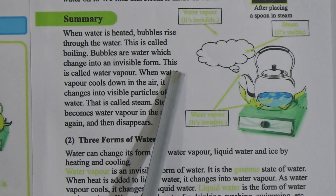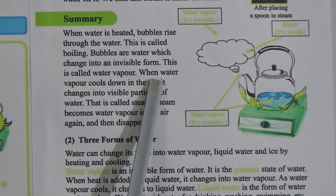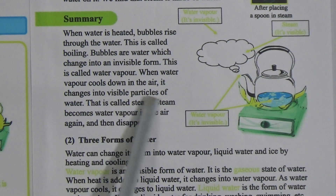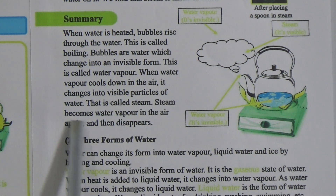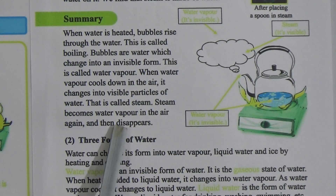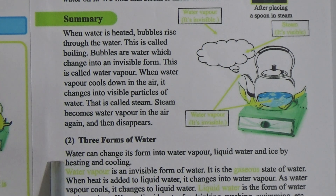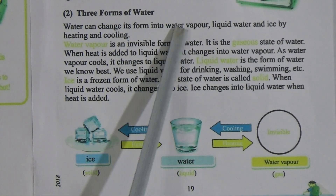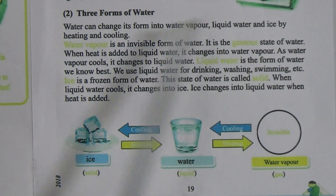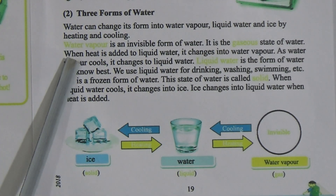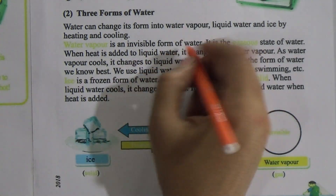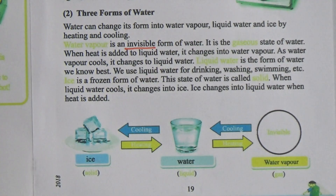When water vapor cools down in the air, it changes into visible particles of water — this is called steam. Then steam becomes water vapor in the air again and disappears. Water can change its form into water vapor, liquid water, and ice by heating and cooling. Water vapor is an invisible form of water — it is the gaseous state of water.